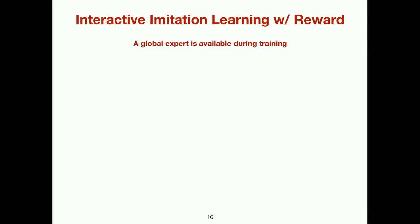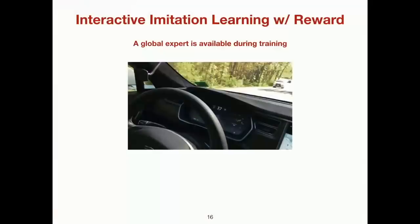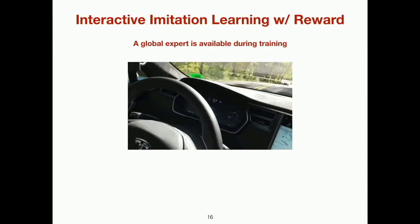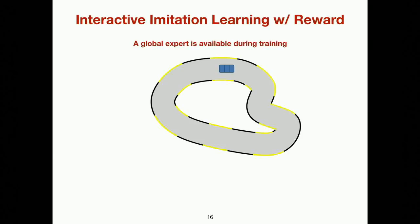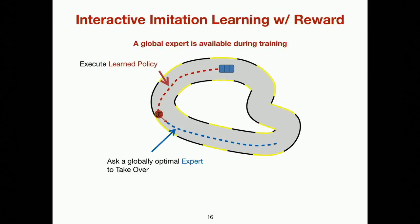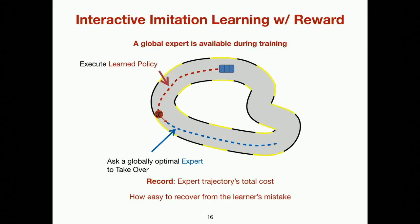In this part of the talk, we'll focus on interactive imitation learning with access to reward signals. The setting is: we have a globally optimal expert available during training, and we can query feedback from this expert. One example is a human sitting behind the wheel who can take over the car whenever the system asks. More formally, we drive using the current learner policy to some point, then ask the interactive expert to take over from that point, drive to the end of the episode, and record the expert trajectory's total cost. This cost indicates how easy it is to recover from a potential mistake just made by the learner.